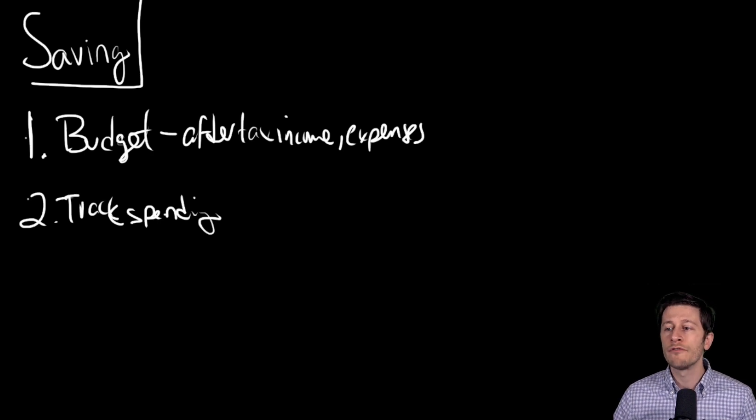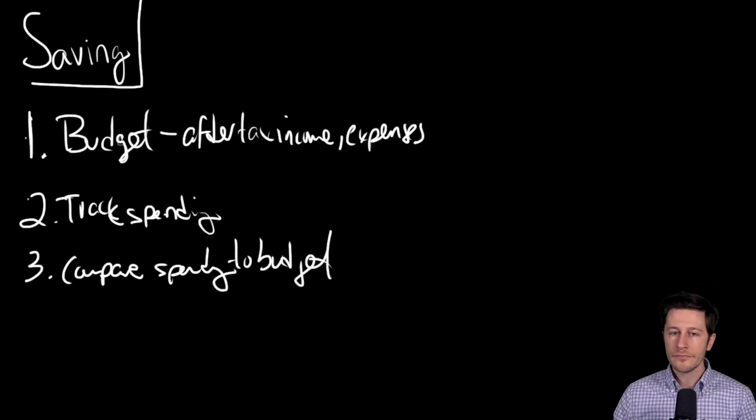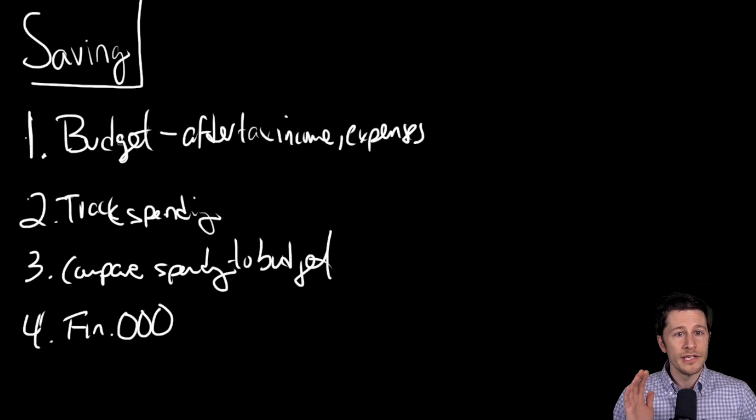And then you also have to regularly compare spending to budget. Now, something else you should do is make sure that you are following the financial order of operations. This is another segment that we did individually - we have a separate video. But the idea is it's crucial to avoid high-interest debt, to be protected with insurance, to know what is the right order that I should be spending and organizing my savings. This will allow you to save more money in the long run.